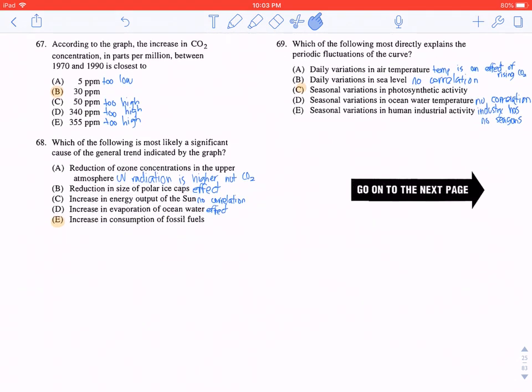Question 68: Which of the following is most likely a significant cause of the general trend indicated by the graph? It wouldn't be A, reduction of ozone concentration in the upper atmosphere, because this would mean that UV radiation is higher, not CO2 emissions. It wouldn't be B, reduction in the size of polar ice caps, because it's actually an effect of increased CO2 emissions. It wouldn't be C, increase in energy output of the sun, because this has no correlation with CO2 levels.